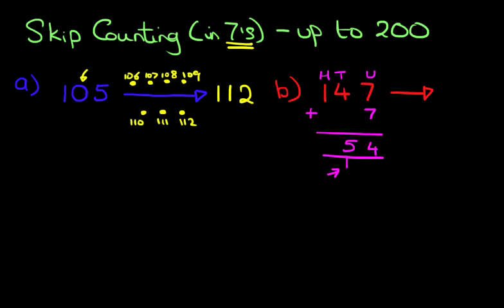And lastly the hundreds, the one remains one. That is our answer. The number after 147 when counting in sevens is 154.